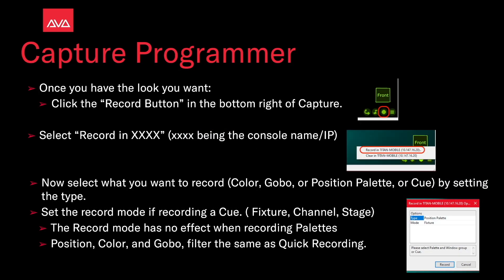Once you have the look you want, click the Record button in the bottom right-hand corner of Capture, circled here in red, and then select Record in XXX — XXX being the console's name or IP. Now select what you want to record: a color, gobo, or position palette, or a Cue by setting the type. Then set the Record mode if recording a Cue — fixture, channel, or stage. The Record mode has no effect when recording a palette.